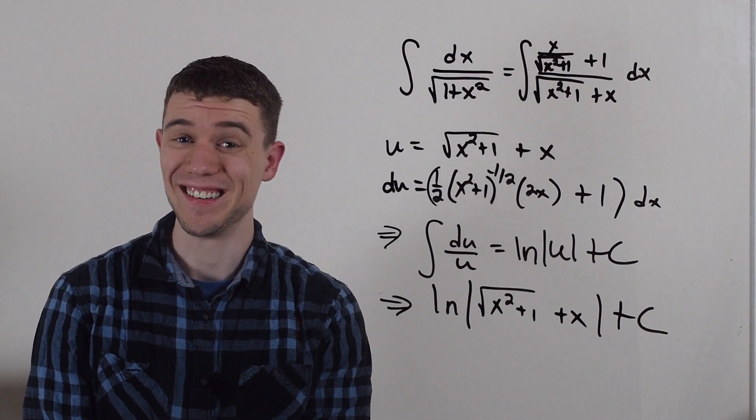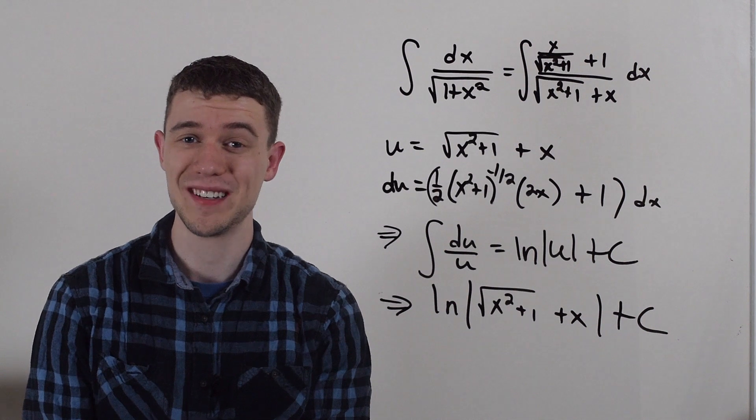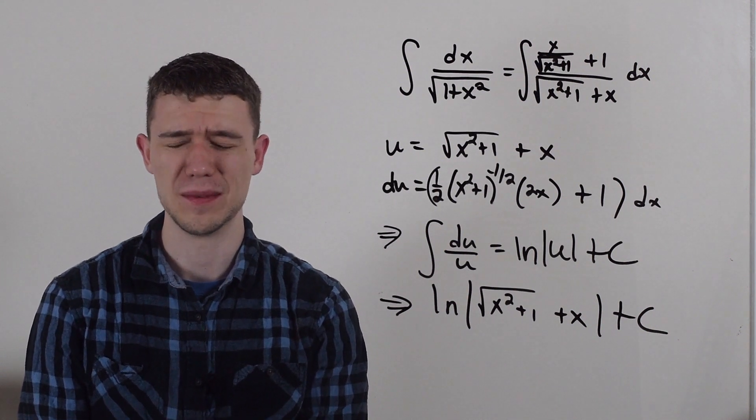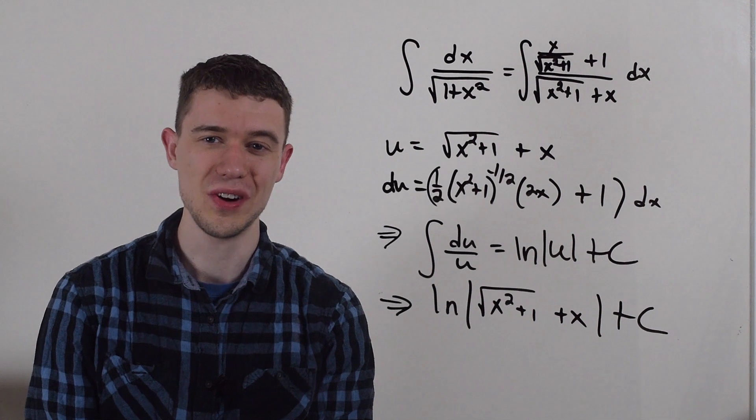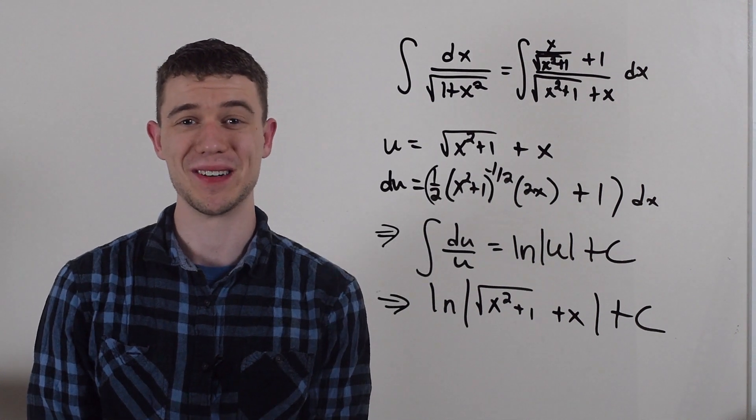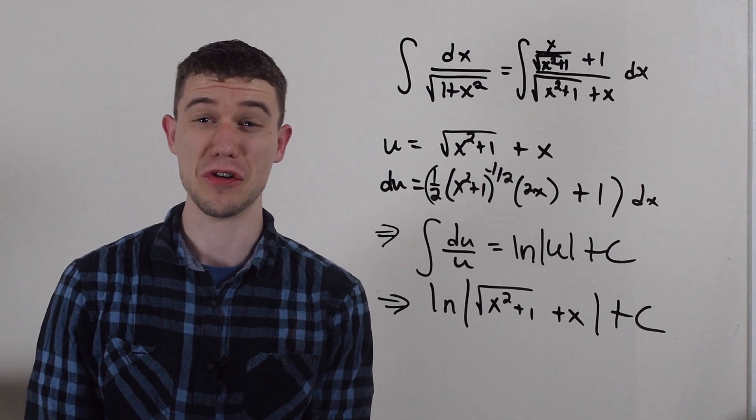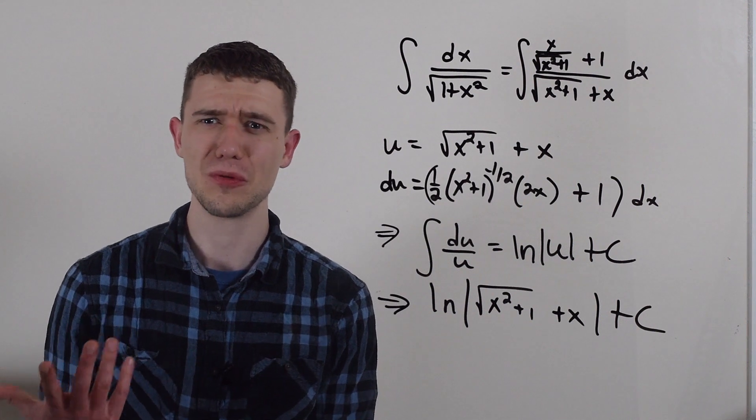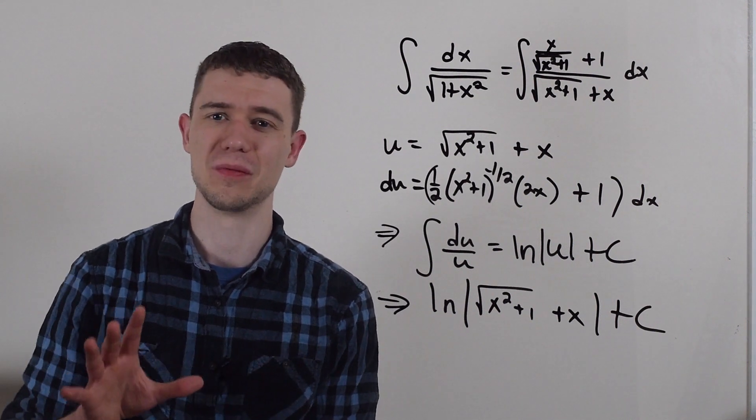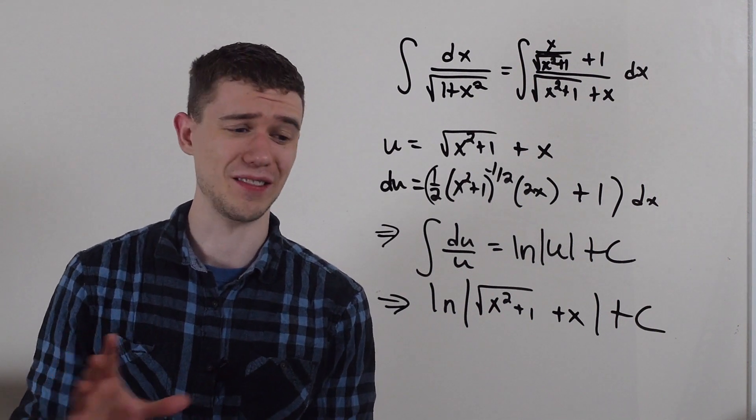I don't know that that's easier. I definitely think probably doing the trig sub is a whole lot easier. But some people really don't like trig. So I don't know if this is better than trig sub or not. It's a lot of adding by zero kind of out of nowhere and crazy factoring. Let's just check really quick to make sure that we got the same thing.